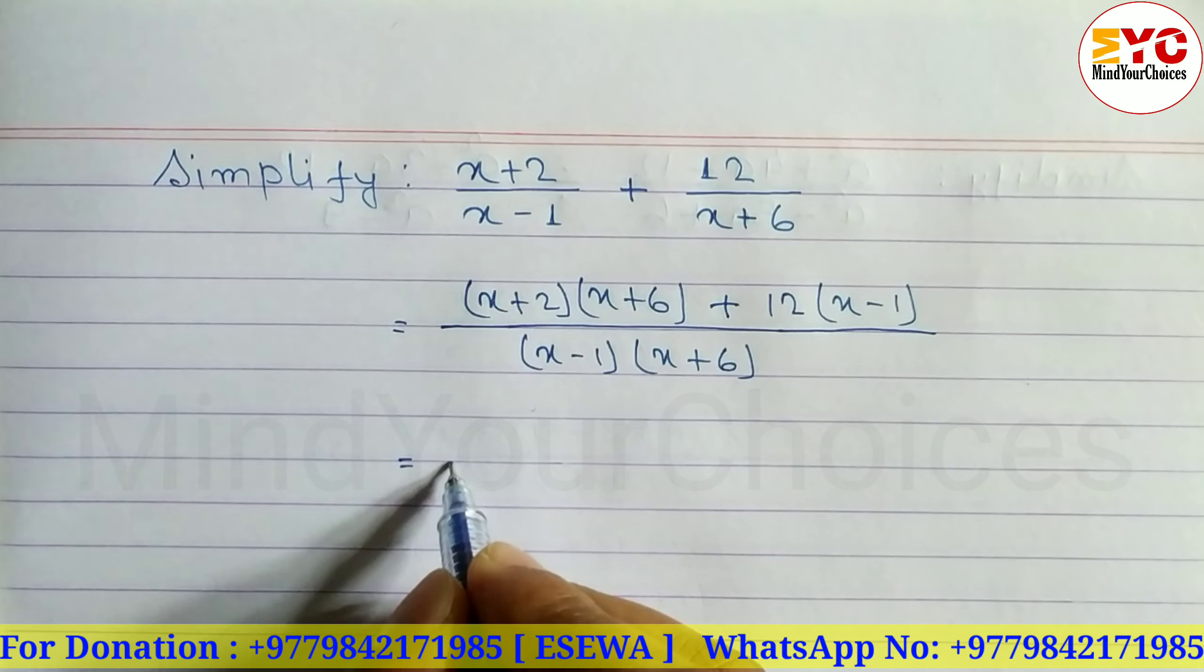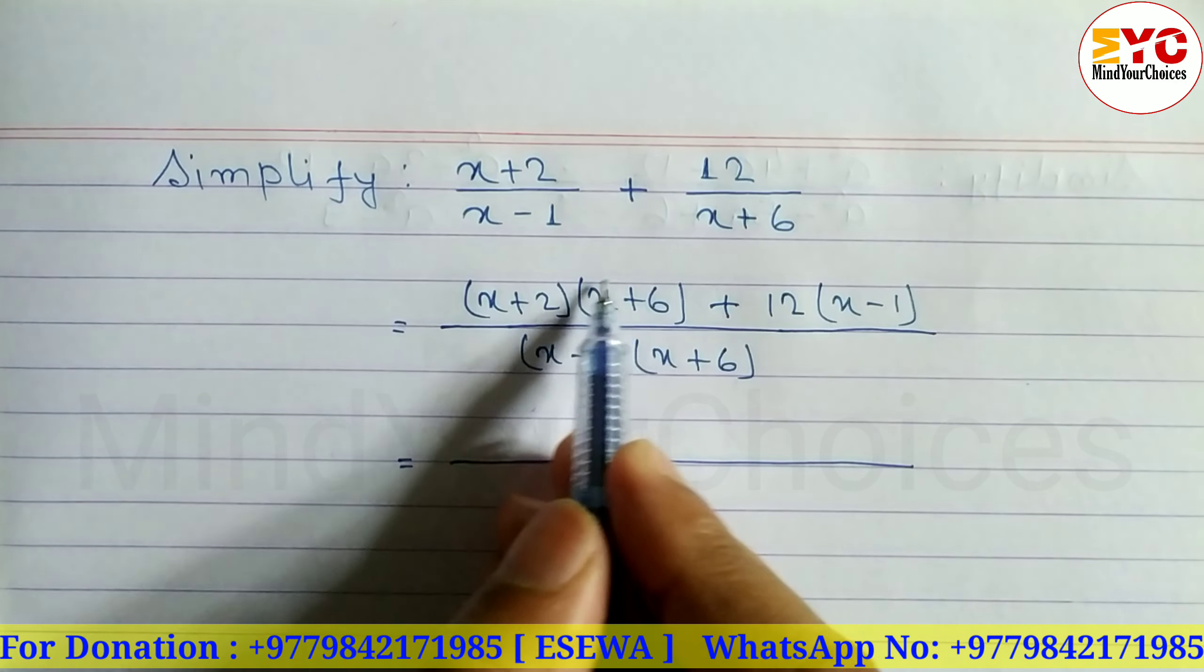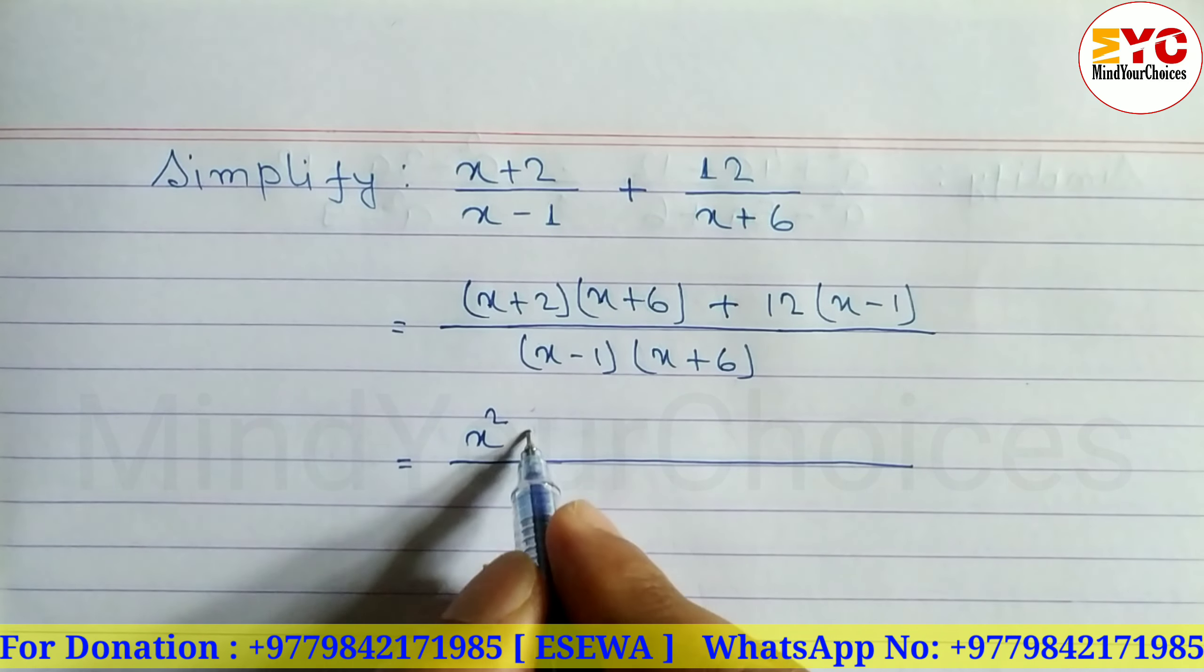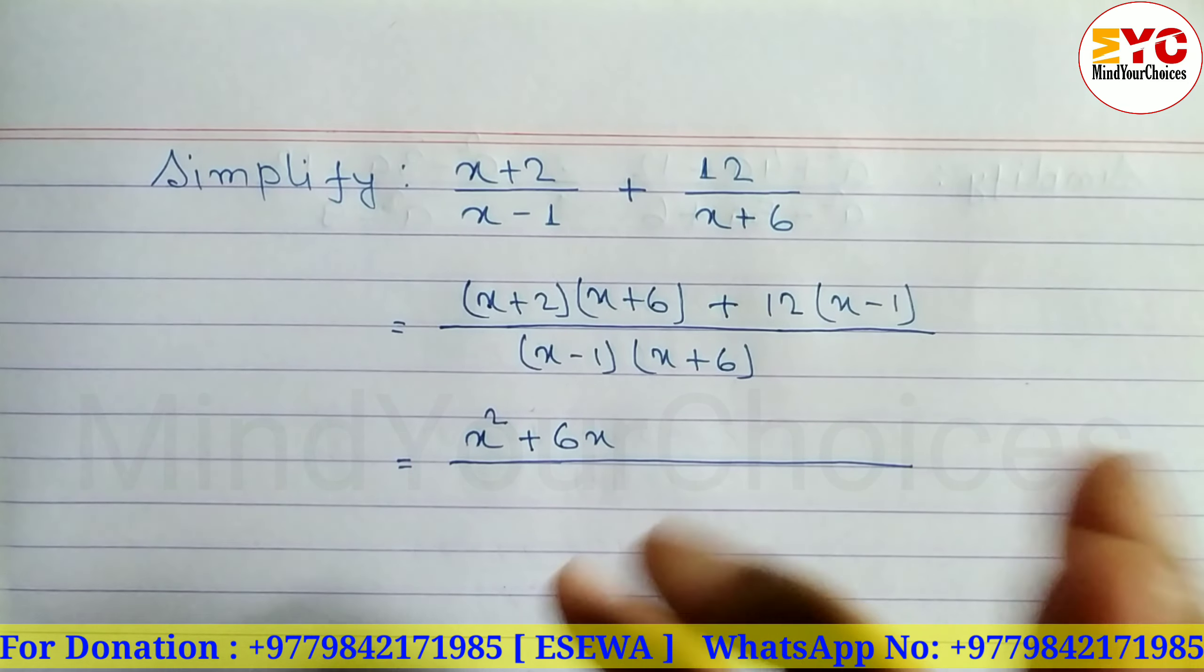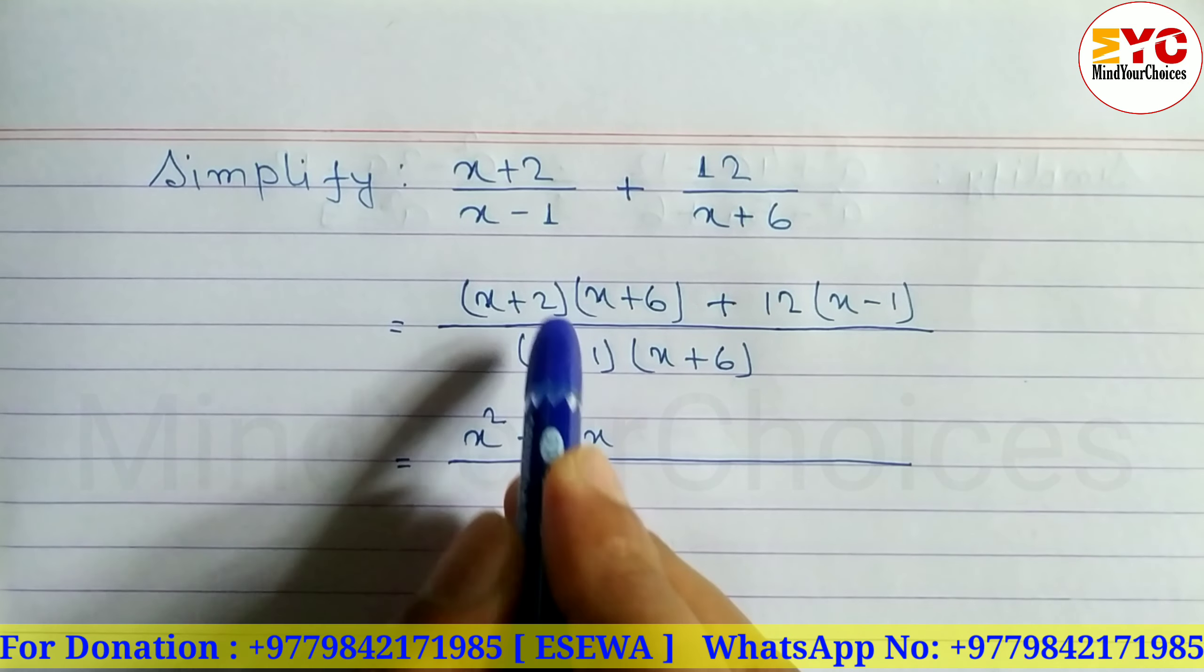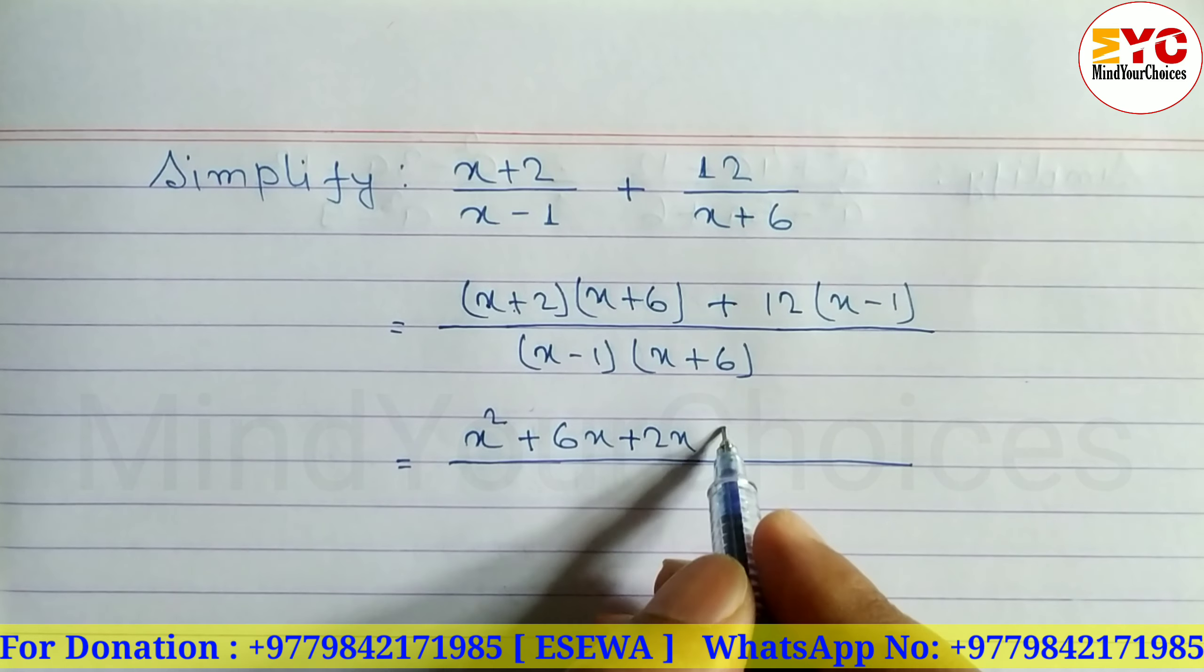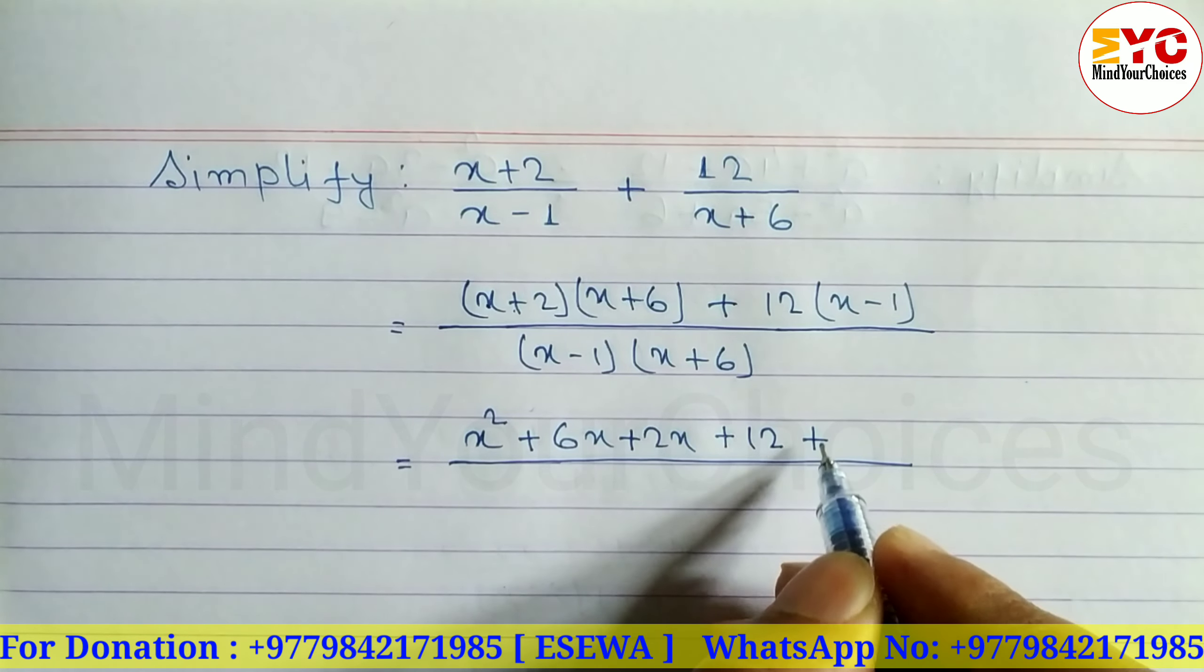Now open the bracket. First multiply x with everything: x into x equals x square. Plus - x into 6 equals 6x. From the beginning: x into x gives x square, x into 6 gives 6x. Now 2 multiplies: 2 into x equals 2x. So we can write plus 2x. Plus - 2 into 6 equals 12, plus.